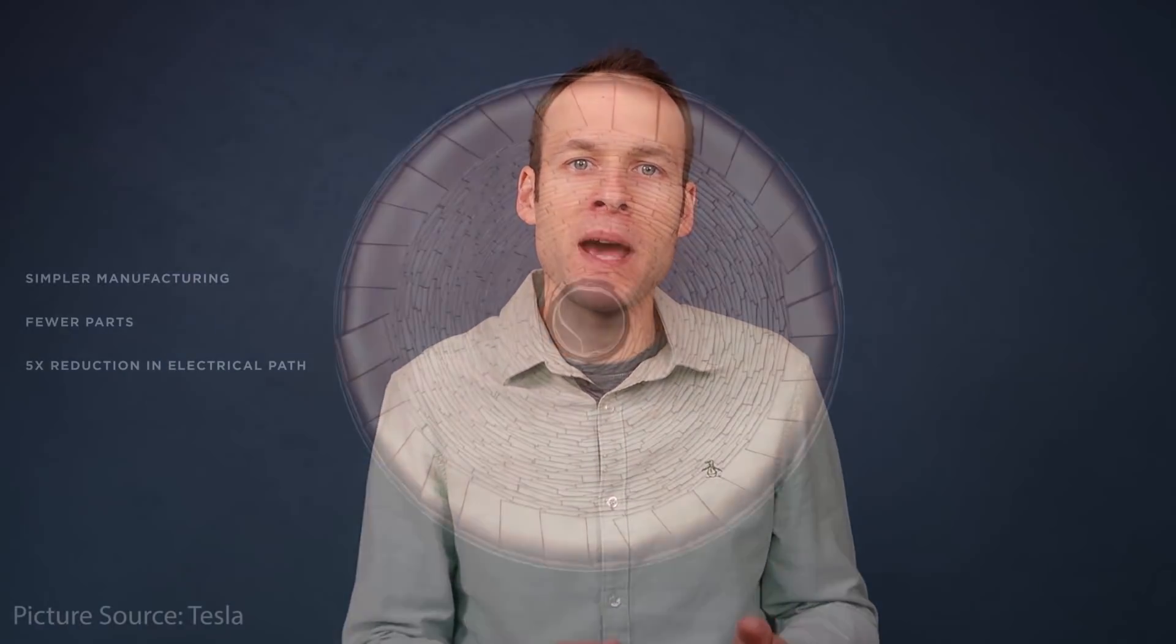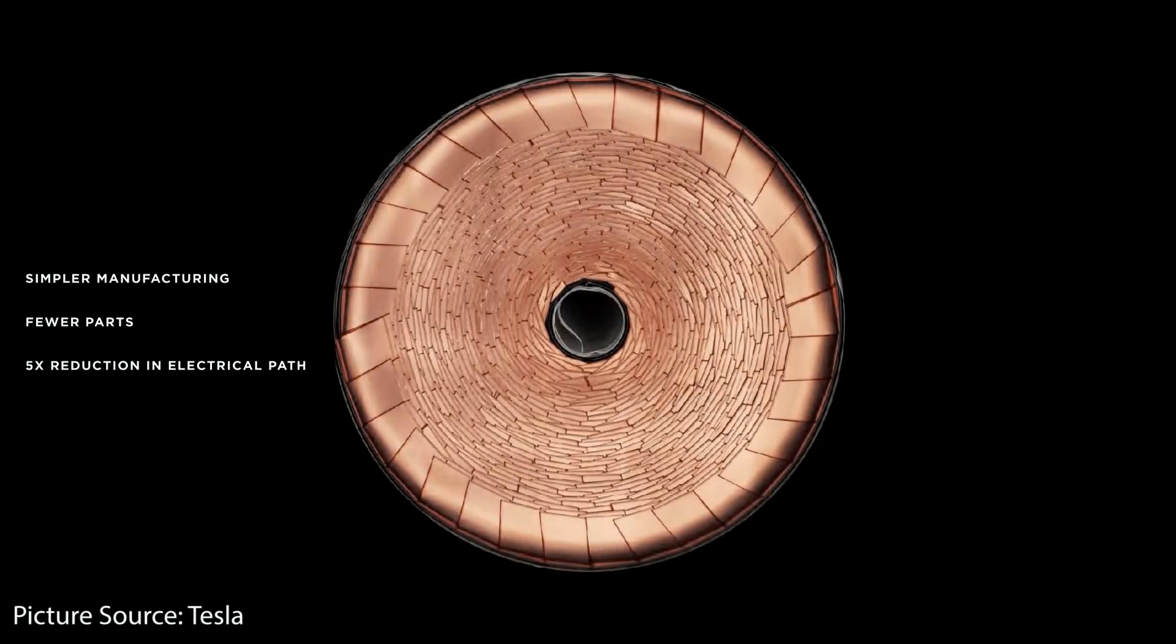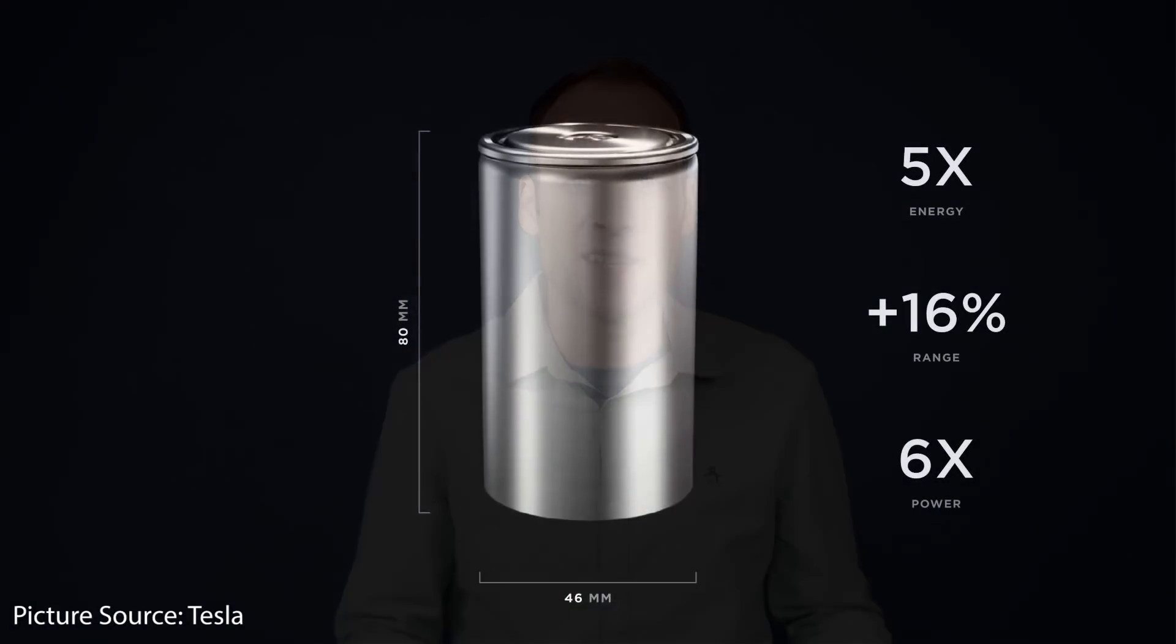We know that for the cell to be that large, it has to be tabless. So if LG makes this large cell for Tesla for the Model Y, it's going to be tabless. But the 4680 cell format is chemistry agnostic, meaning you can use other cell chemistries in it.